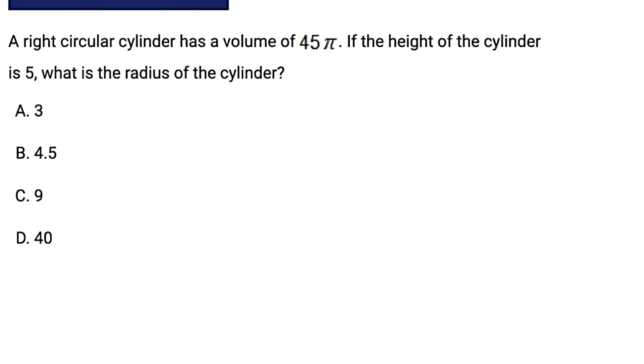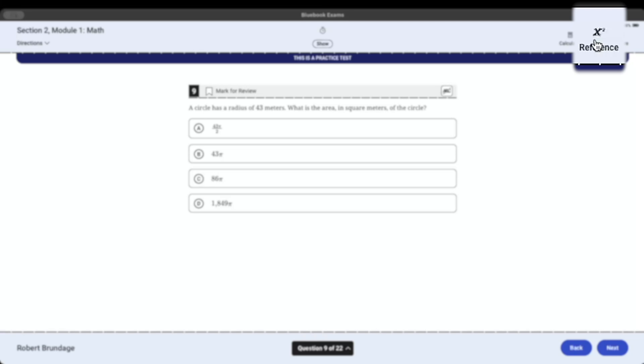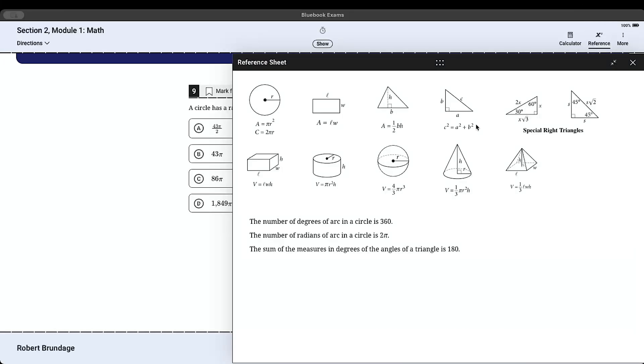Take this question, for example. Take a look at it. See if you can solve it on your own first. But yeah, let's say we have no idea. We don't know what the volume for a circular cylinder is. How are we supposed to do this? Well, you click on that little button, and you're going to see this reference sheet that pops up, right? And where is our circular cylinder? Well, hopefully, you know what a circular cylinder looks like. You do need to know that much. It's basically a Pringles can, or in this case, this little guy right here.